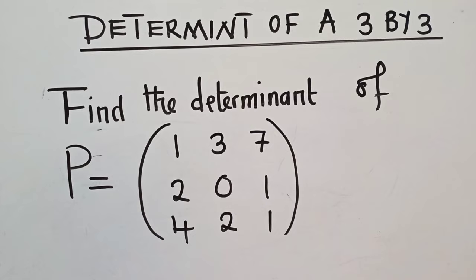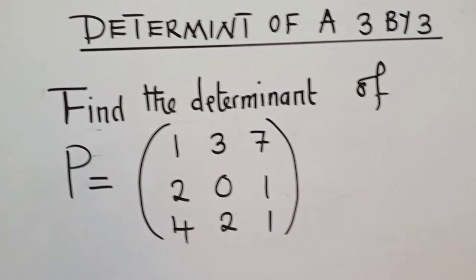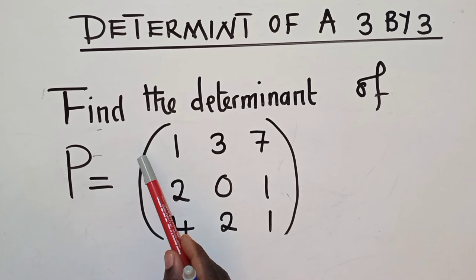So now how do we tell that we are dealing with a 3 by 3 matrix? You count the number of rows. So how many rows do we have? They are 1, 2, 3. What about columns? 1, 2, 3. So it's 3 rows by 3 columns. So it's a 3 by 3 matrix.